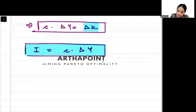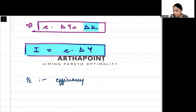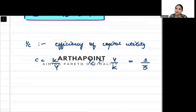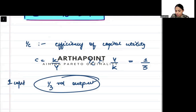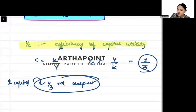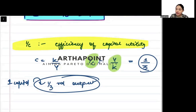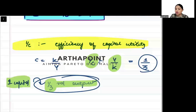1 by c is also called the efficiency of capital utilization. Since c is capital by output, 1/c is output by capital. So if it takes 3 capital to produce 1 unit of output, then each unit of capital produces one-third of the output. This tells us the efficiency of capital — how efficient one unit of capital is — given by the inverse of the capital-output ratio.